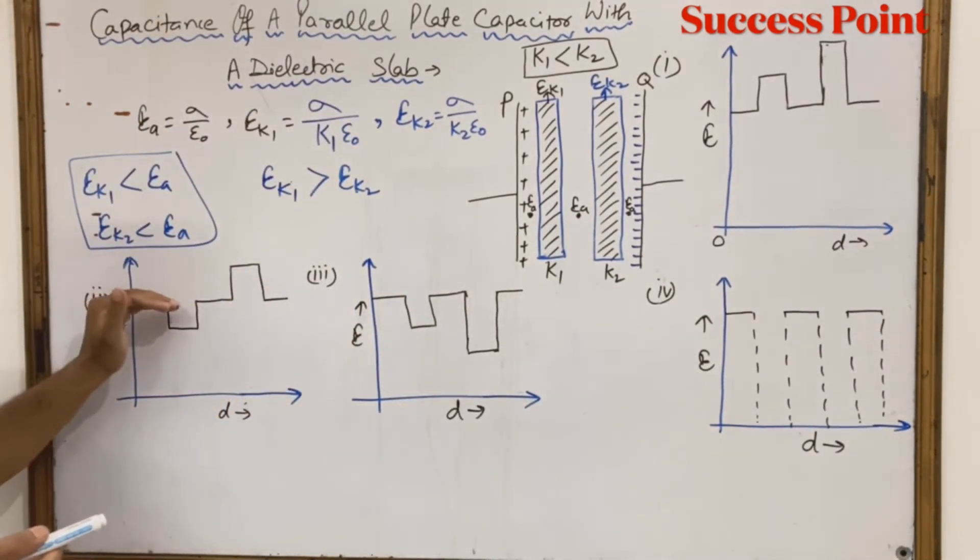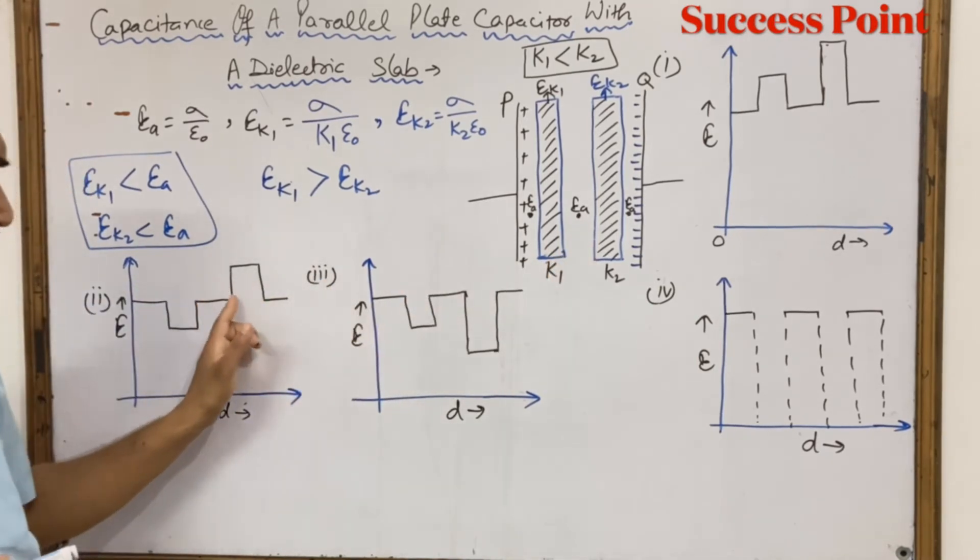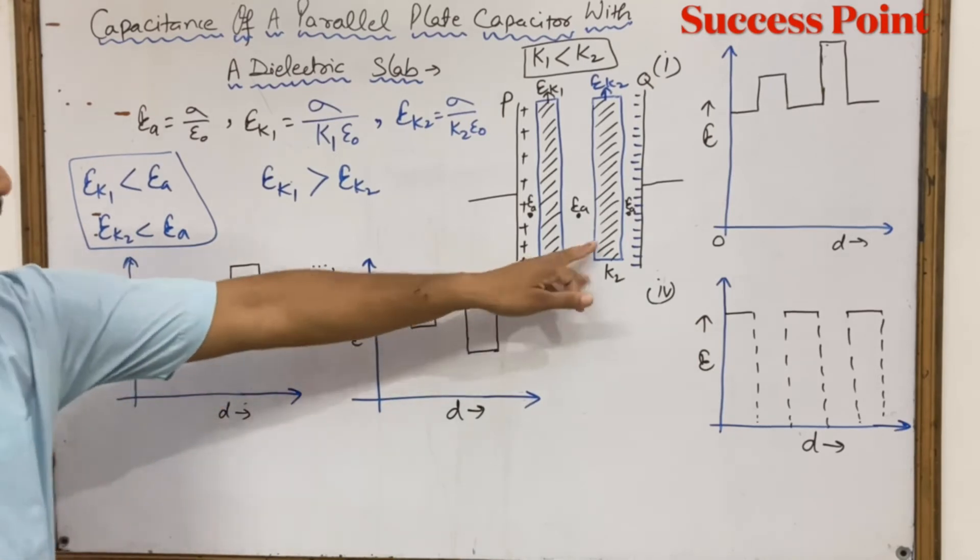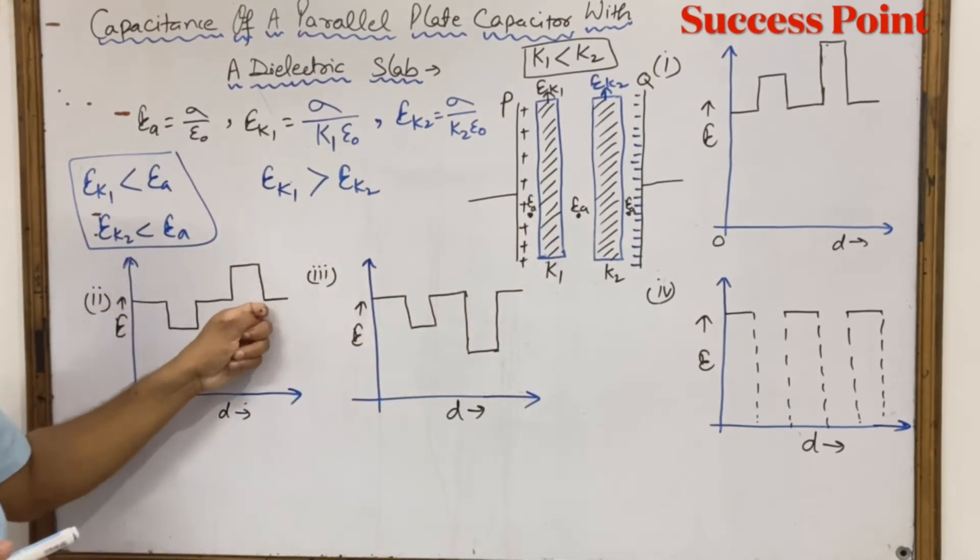Here, air electric field Ea, then EK1 which is smaller than Ea, then EK2. But this shows Ea is smaller than both, so this is wrong. So this graph is wrong.